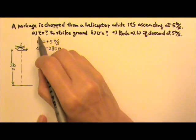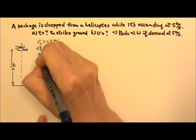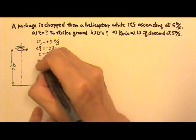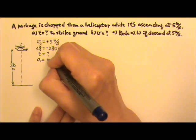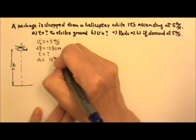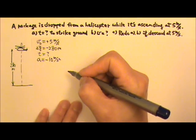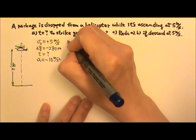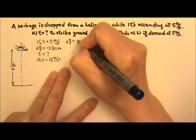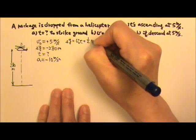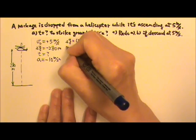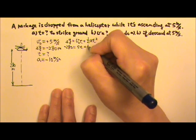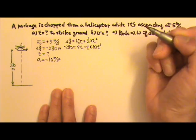We are looking for the time T for the package to strike the ground. The acceleration is negative 10, because it's downward. There is no final velocity involved, so this equation is convenient: delta Y equals v₀T plus one-half aT squared. So delta Y is negative 280, that's 5T plus one-half times negative 10 T squared.